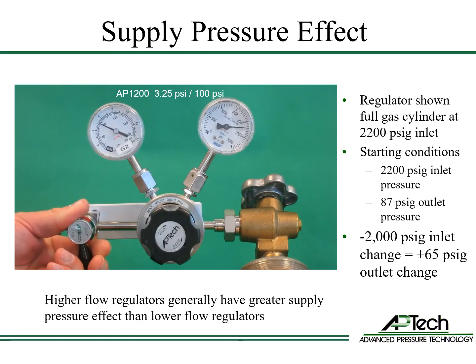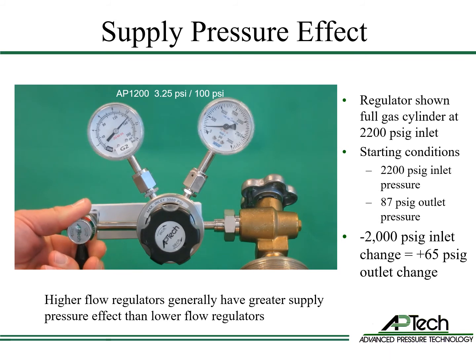Now let's look at supply pressure effect in an AP1200 regulator. In this example, the inlet pressure is 2200 psi and the outlet pressure is 87 psi. As the inlet pressure drops to 200 psi — the pressure when cylinders are often changed — the outlet pressure continues to rise. The 2000 psi drop in inlet pressure causes a 65 psi increase in outlet pressure. The AP1200 supply pressure effect is 3.25 psi per 100 psi.